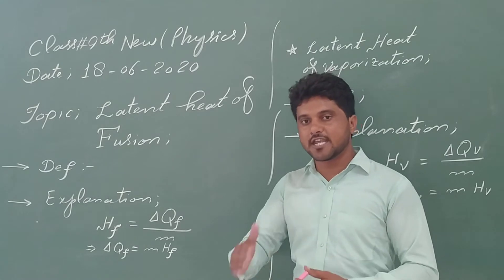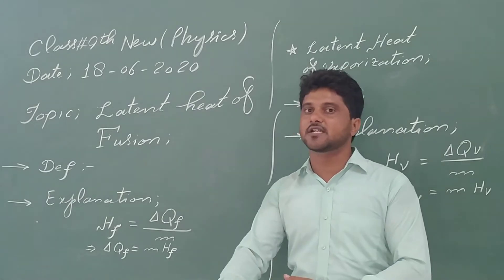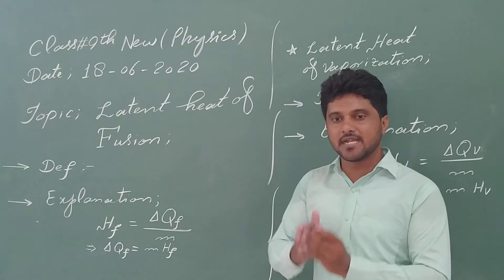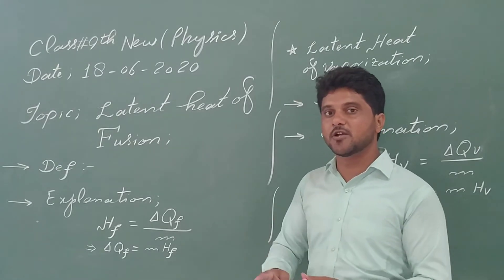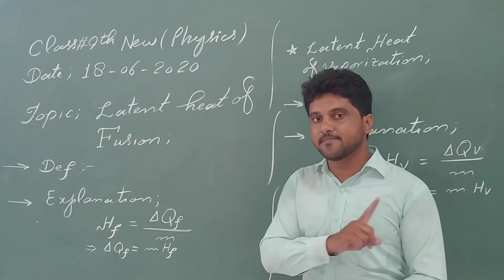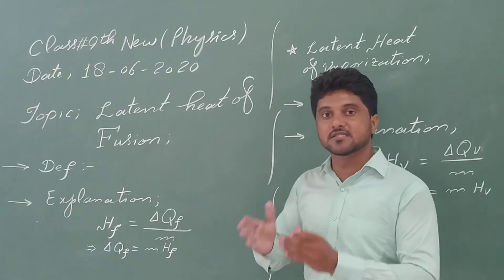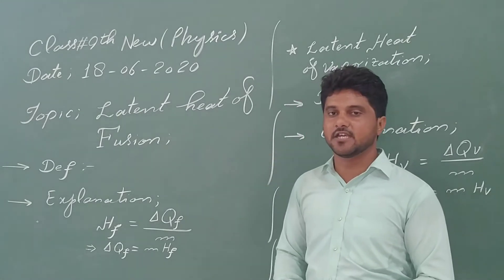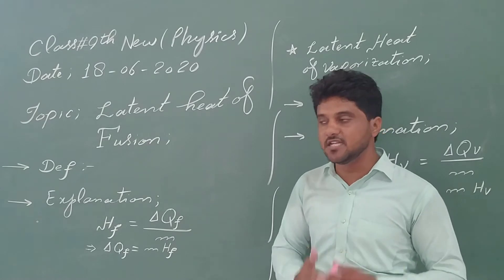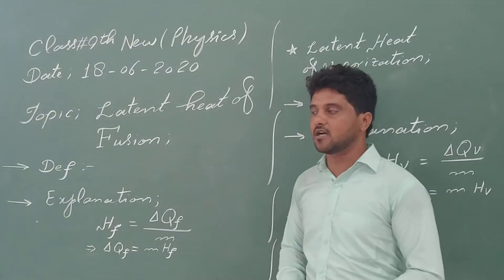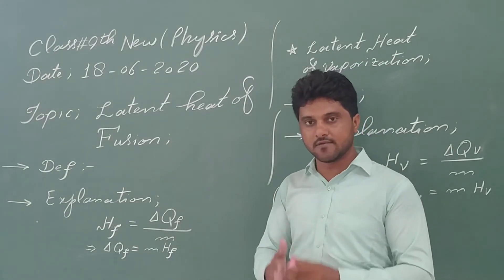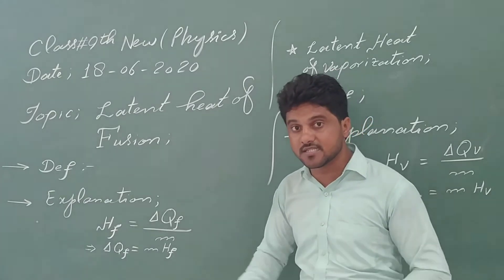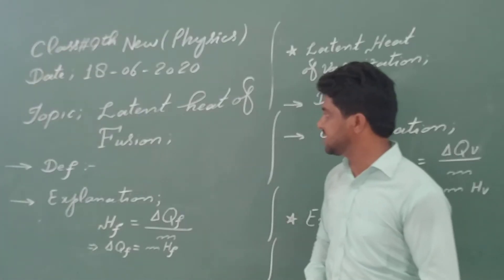When we increase temperature and then convert a solid object to liquid, we need a certain amount of heat. That amount of heat required to convert unit mass of a solid into liquid without changing temperature is called the latent heat of fusion.